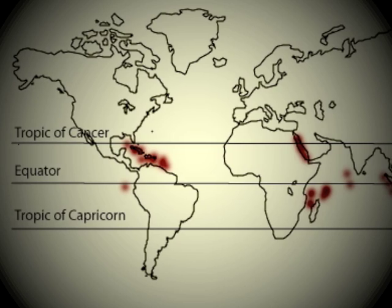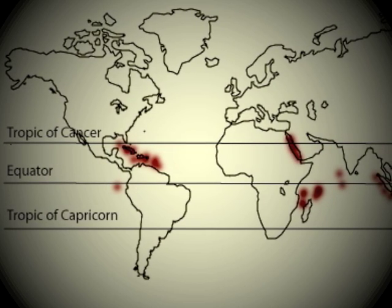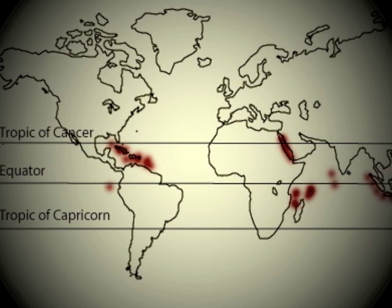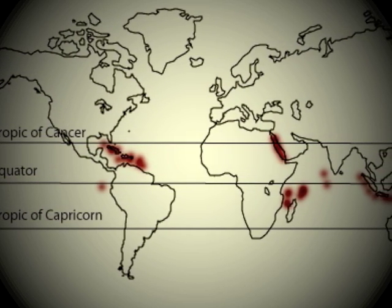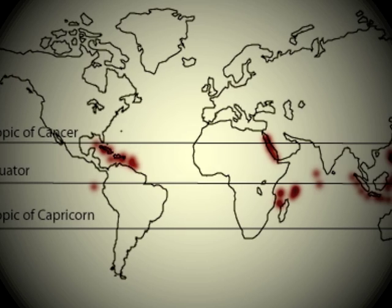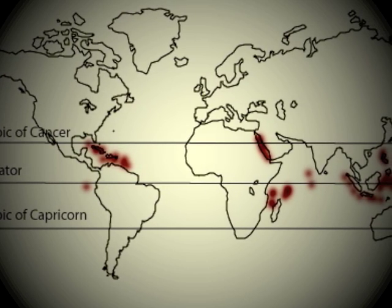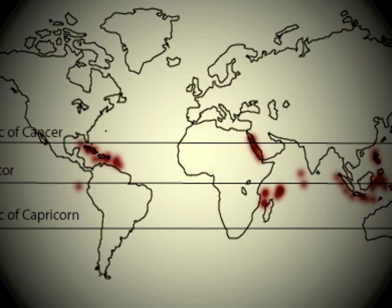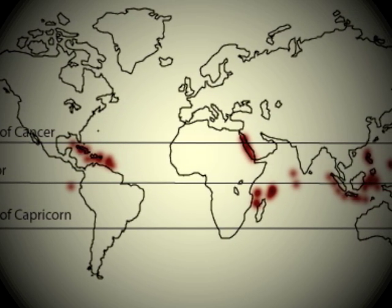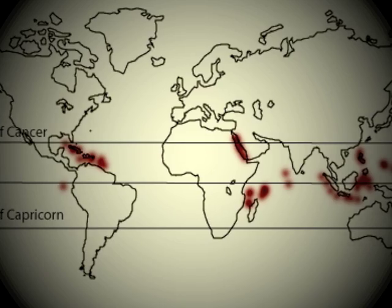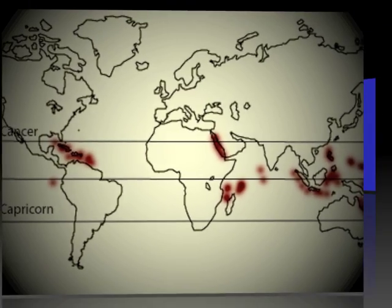Corals grow best on Earth in shallow tropical waters where temperatures are warm, nutrients are scarce, and sedimentation rates are low.